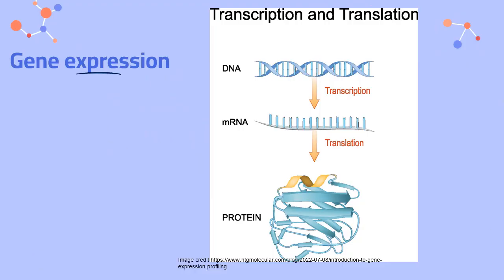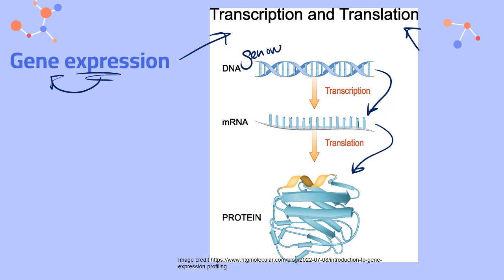Remember that gene expression — turning on and turning off specific genes — involves transcription and translation. Transcription is the process of using a DNA code to produce a piece of messenger RNA. Then in translation, we use that messenger RNA to code for a protein. The sum of all of our genes is a genome. The sum of all of our proteins is a proteome. And the sum of all of our messenger RNA transcripts is a transcriptome.